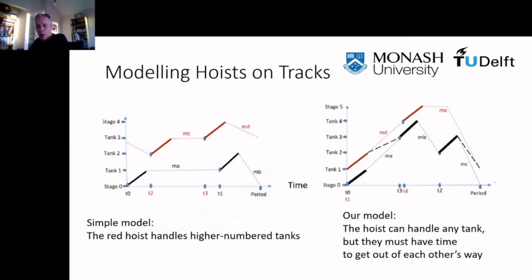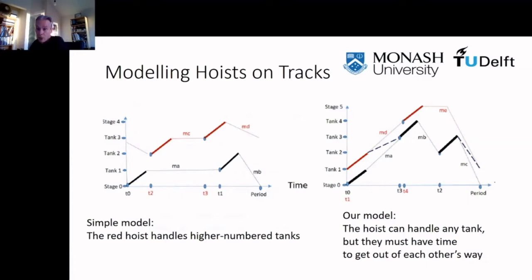The constraints require all removal times to fall within the period, ensure jobs remain in their tanks for the required amount of time, that tasks performed by the same hoist don't overlap, and that hoists on the same track don't crash. Simpler models avoid hoists on the same track from crashing by assigning a fixed set of tanks to each hoist. However, in our model, hoists can go into each other's areas as long as they can get back while the other hoist remains out of the way, requiring additional constraints so that the paths of the two hoists remain separate and don't cross.